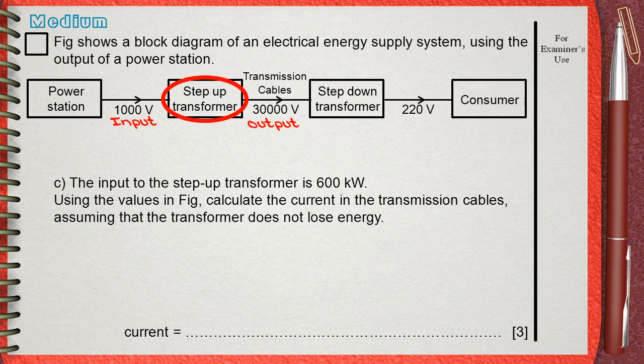Another main rule in studying transformers which are 100% efficient and transformers that do not lose energy is that power input equals power output.